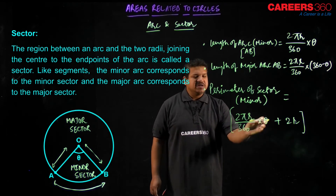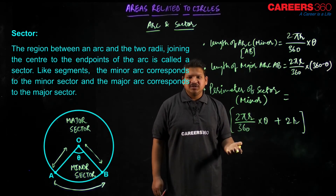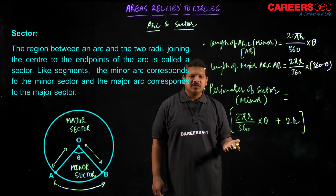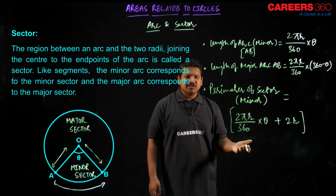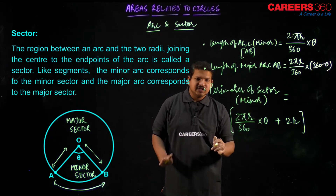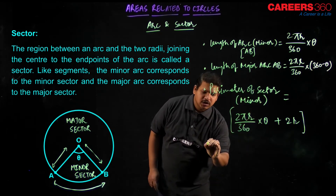Similarly, if I replace theta by (360 − θ), I will get the perimeter of the major sector. I hope that is clear to you.